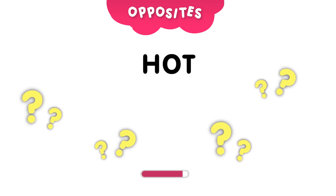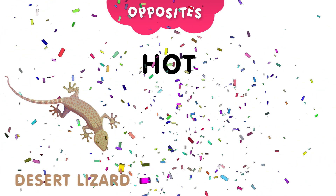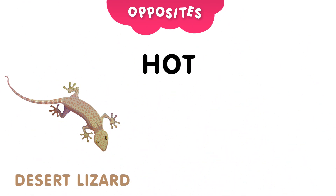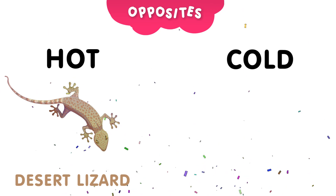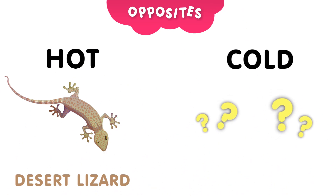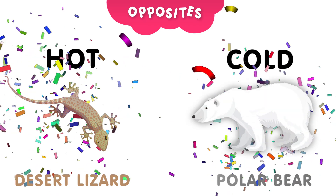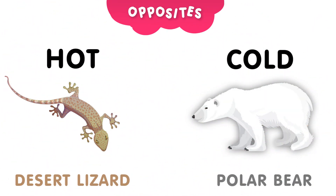Next up, we have the word hot. Can you guess which animal loves hot temperatures? The hot animal is the desert lizard. What's the opposite of hot? Can you guess? Take 5 seconds to think about it. The opposite of hot is cold. Can you guess which animal loves cold temperatures? And the answer is, the polar bear. Polar bears live in cold climates.